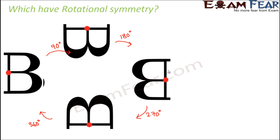So what did we observe? Between 0 degrees and 360 degrees, how many identical positions do you find? This is the only identical position that you found, right? This is the common scenario which happens with every object — when you rotate an object by 360 degrees, it comes back to its original position. So do you think that this object has rotational symmetry? Not really, because this is something which happens with every object. This object shows only one identical position between 0 degrees and 360 degrees.